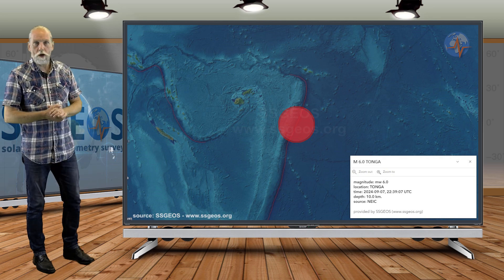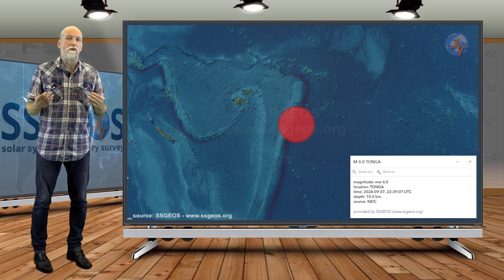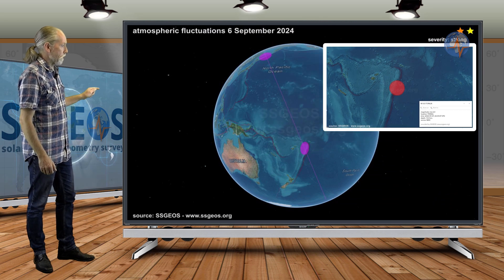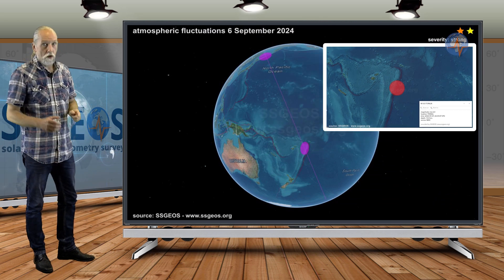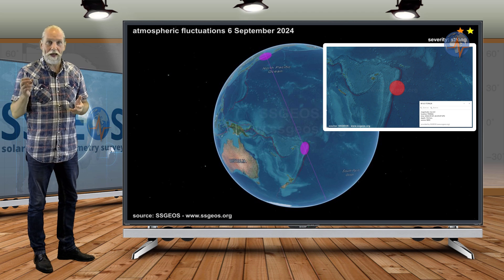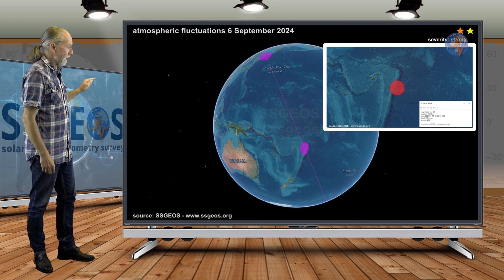I mentioned the Tonga earthquake, magnitude 6. And if you look at the atmospheric fluctuations, on the 6th we had fluctuations marking the region of Tonga. And within a day, one, two days, we had this strong earthquake, magnitude 6, right there at Tonga.